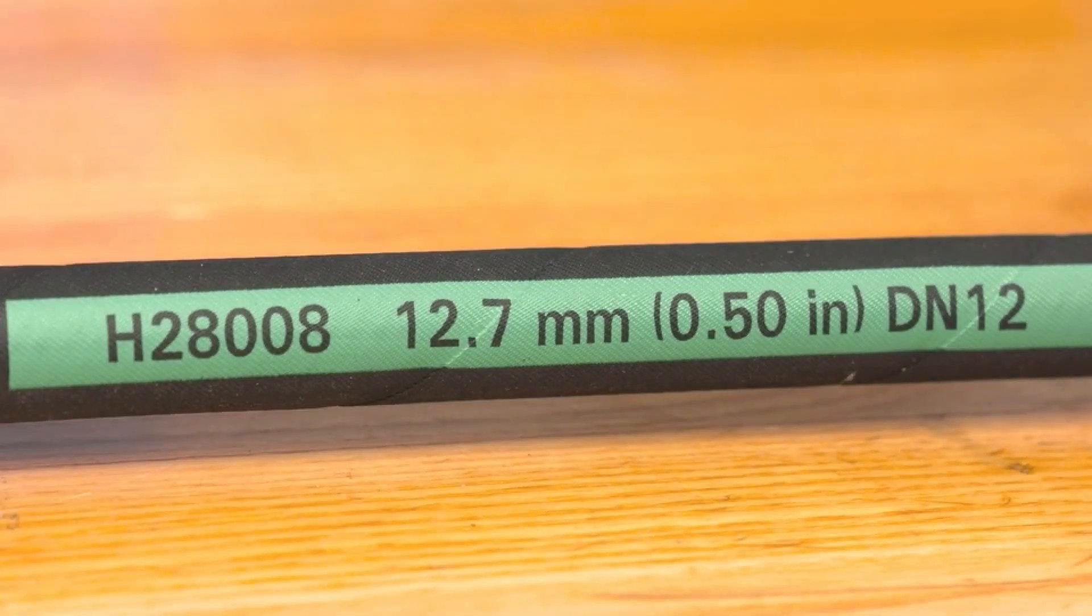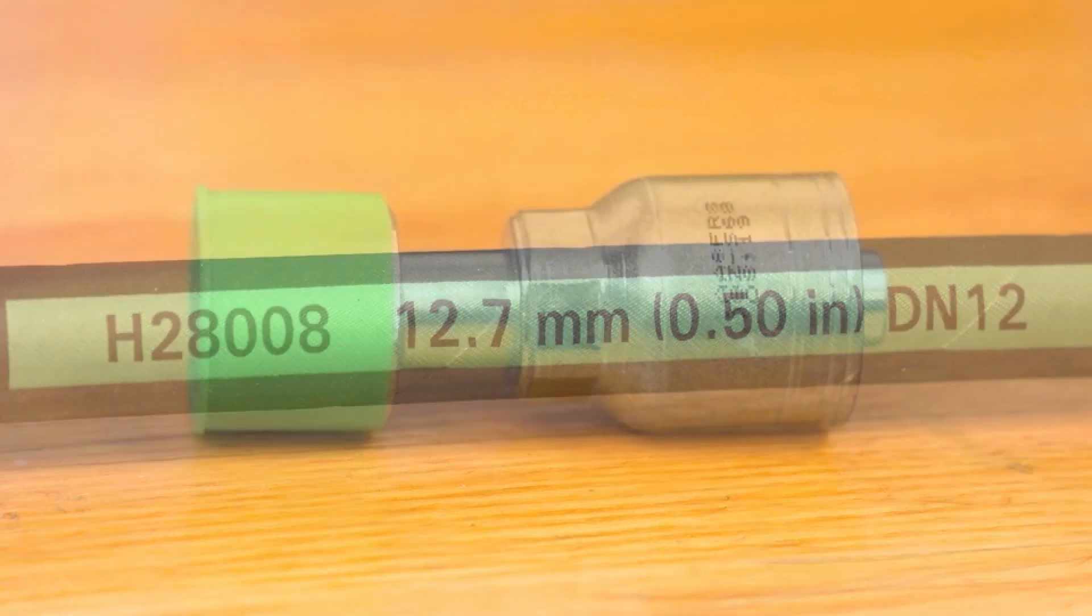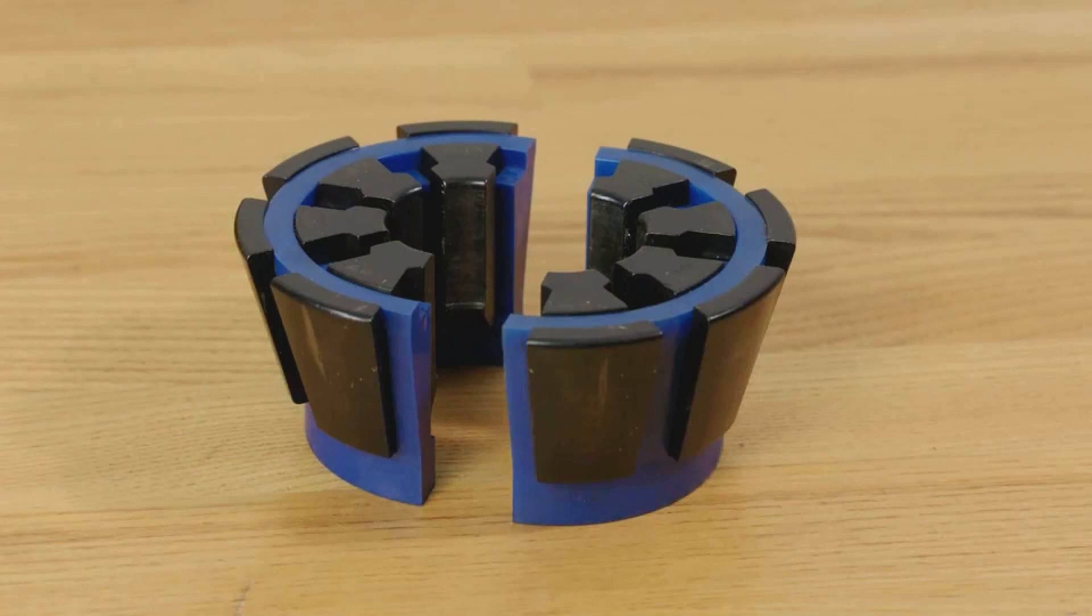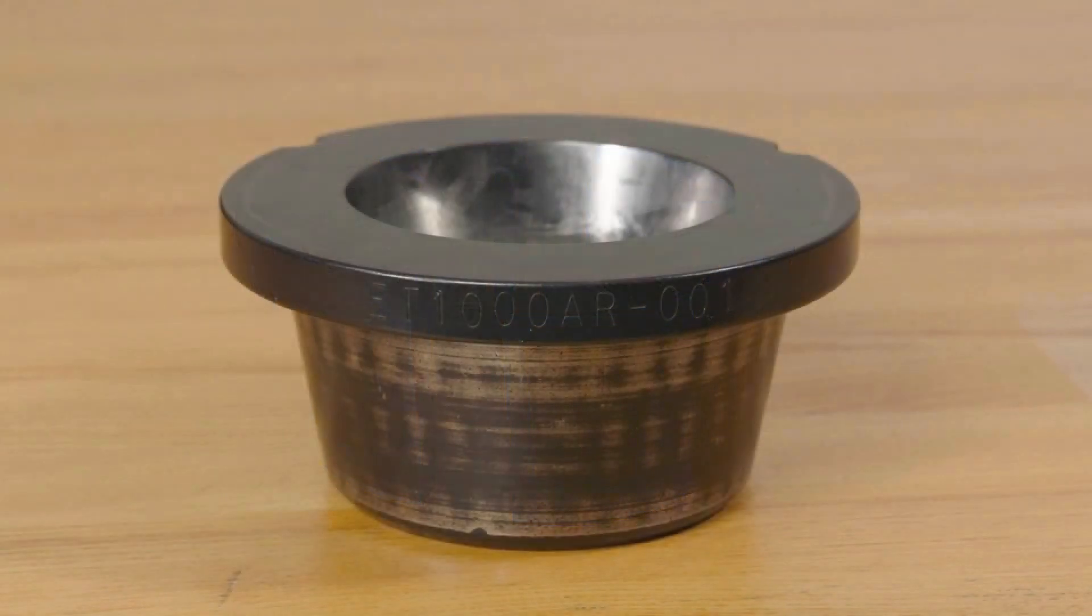For this demonstration, we are crimping Weatherhead by Danfoss H2808 with our Z series fitting. This requires the ET313DC8Z collet. The Z series collet segments are black and the collet cage color for the dash 8 size is blue. This requires use of the ET1000AR001 adapter ring.